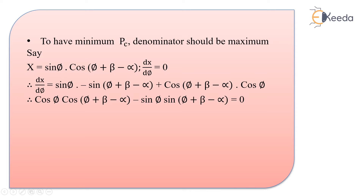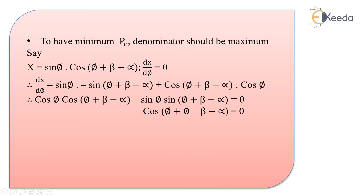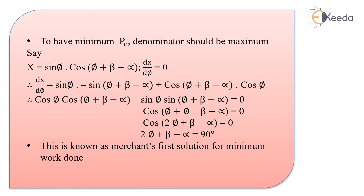Since cos a cos b minus sin a sin b equals cos(a+b), we get cos of (phi plus phi plus beta minus alpha) equals cos of (2phi plus beta minus alpha) equals zero. Taking cos inverse of zero gives 90 degrees. So the first solution of Merchant is: 2phi plus beta minus alpha equals 90 degrees. This is the first theory of Ernst and Merchant for minimum power or work done.